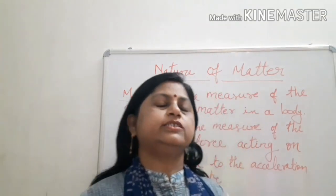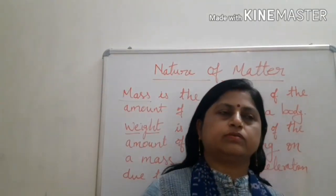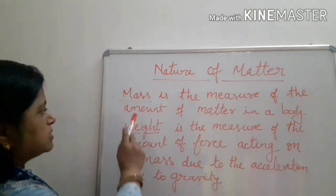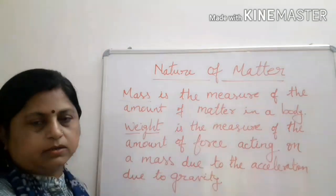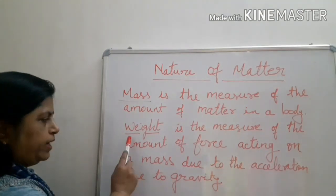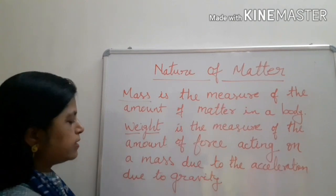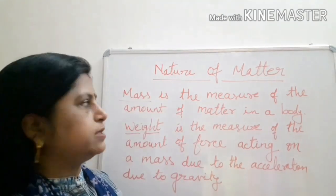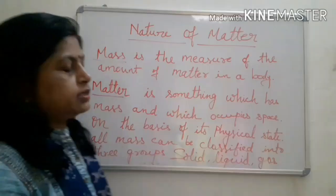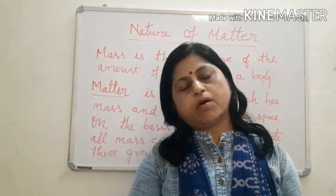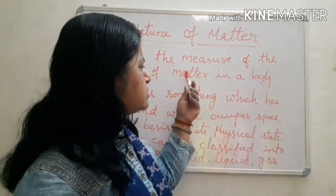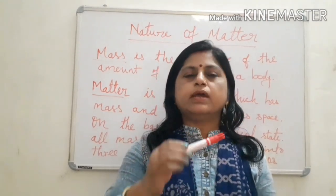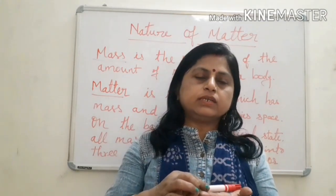In Nature of Matter, we first discuss what is matter. We also need to understand the difference between mass and weight. Mass is the measure of the amount of matter in a body. Weight is the measure of the amount of force acting on a mass due to acceleration due to gravity. All the things around us are made up of matter. Matter is something which has mass and which occupies space.